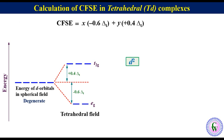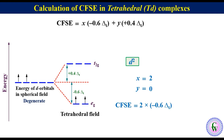If there are 2 D-electrons in the metal ion in a spherical field environment, the electrons will be here. In tetrahedral field, both the electrons will be in eg orbitals. So x is equal to 2 and y is equal to 0. CFSE will be equal to 2 into minus 0.6 delta-t plus 0 into plus 0.4 delta-t. Thus CFSE will be equal to minus 1.2 delta-t.